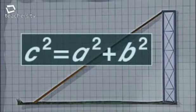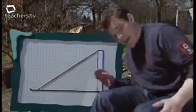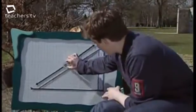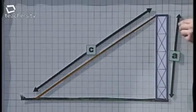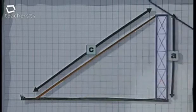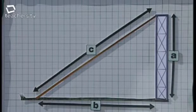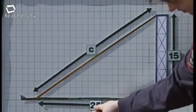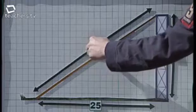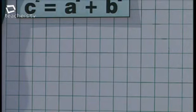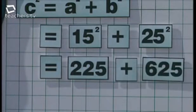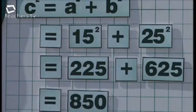Remember, C squared equals A squared plus B squared. Here's the hypotenuse, so we're going to label that C. The height of the tower is A, and the distance from the tower to the anchor point shall be known as B. We already know that the height of the tower is 15 metres, and the anchor point is 25 metres away. Using our formula, C squared equals 15 squared plus 25 squared, which equals 225 plus 625, and that equals 850. But how do we find C? You've got until the guys sort out the rope slide to work it out.